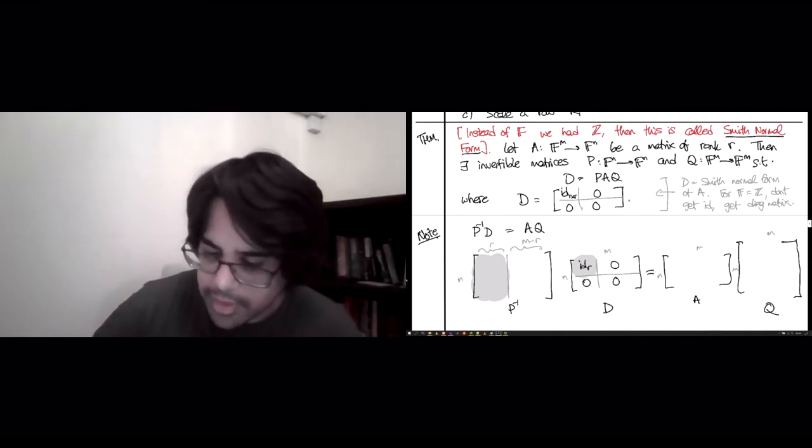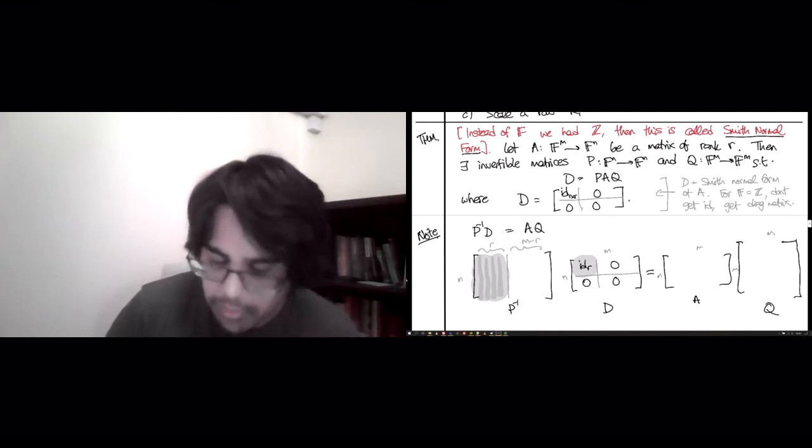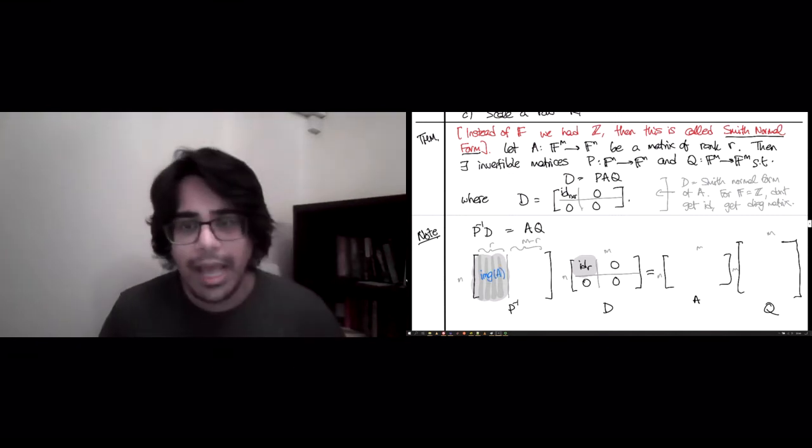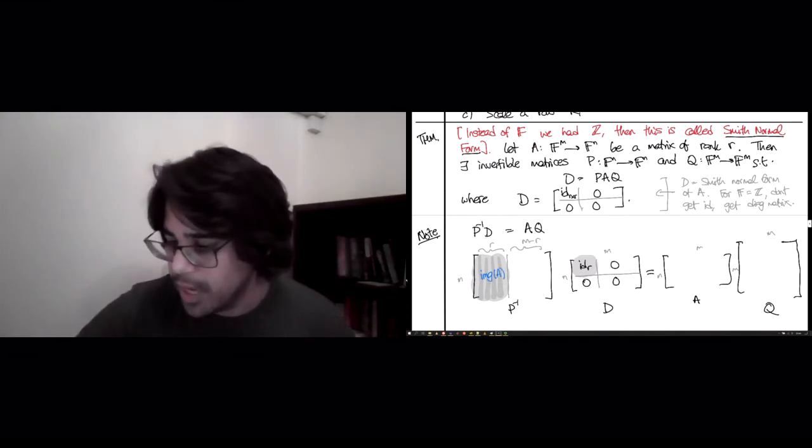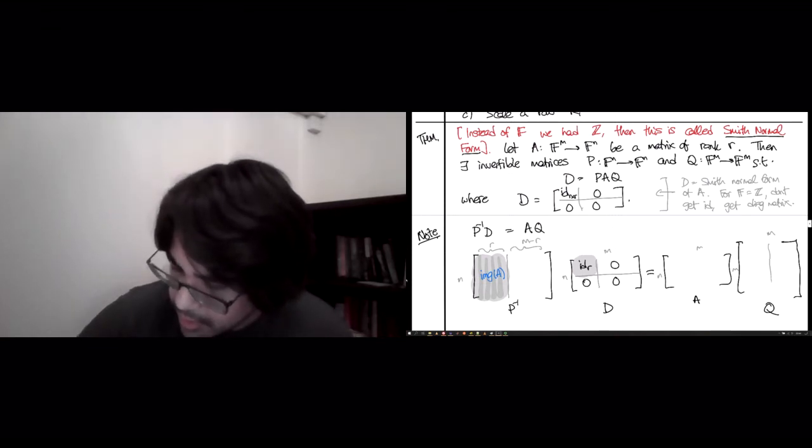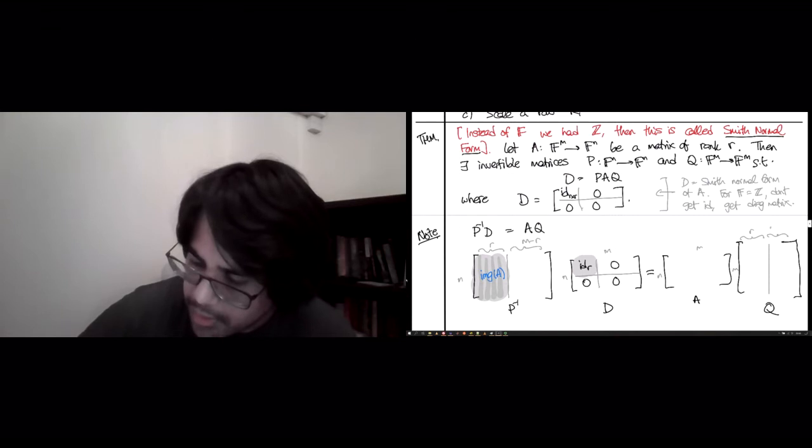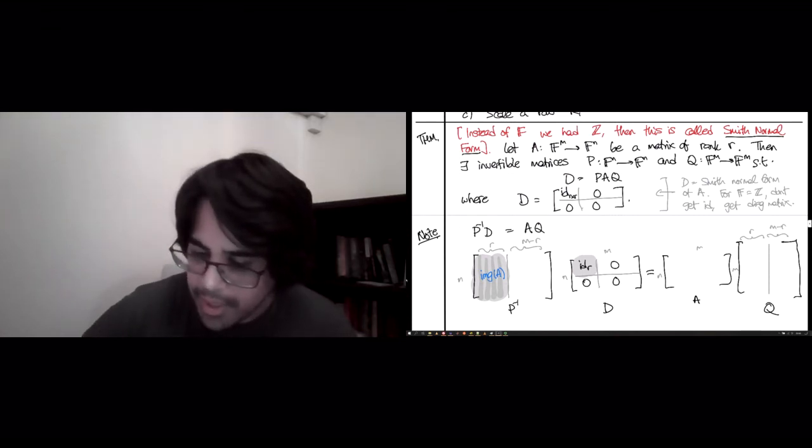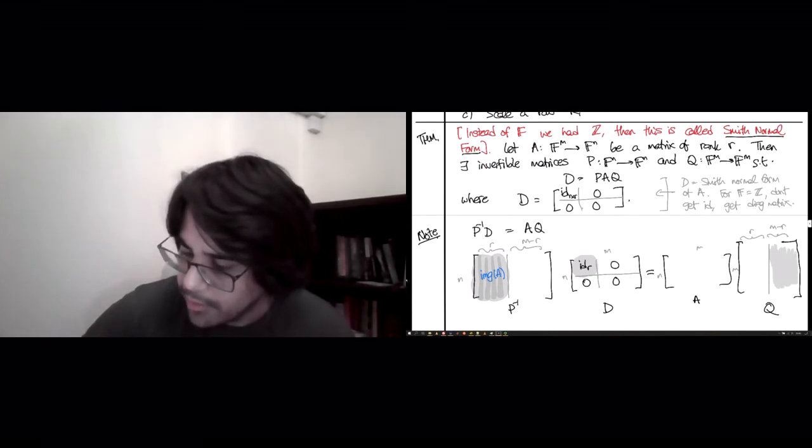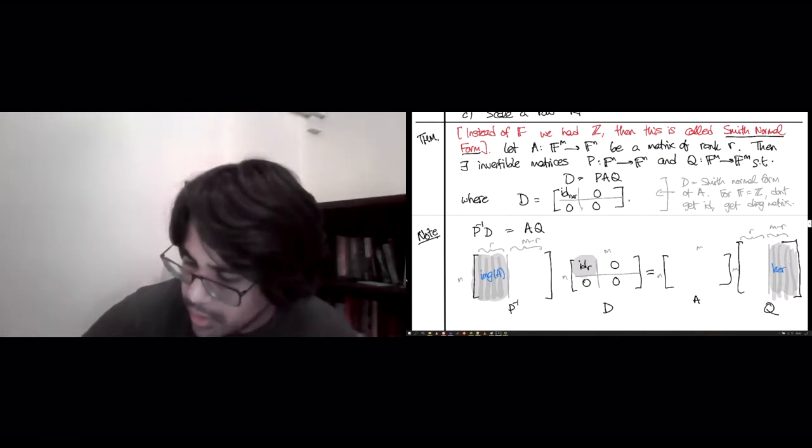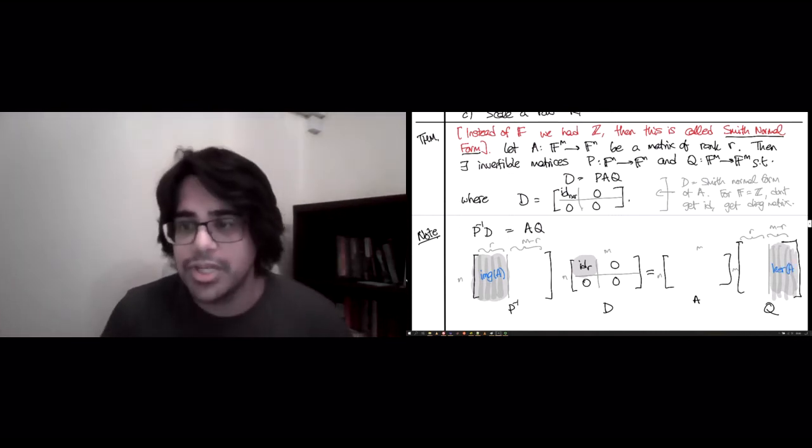So, R, M minus R. Everything this matrix can actually get non-zero values for lives here. So, these first R columns, one, two, three, whatever they are, these contain a basis for the image of A. And, conversely, what's going to happen is on the right-hand side, if you look at the last M minus R columns. So, here's R, here's M minus R. Those last M minus R columns of Q are going to contain a basis for the kernel of A. So, this is the fundamental decomposition.